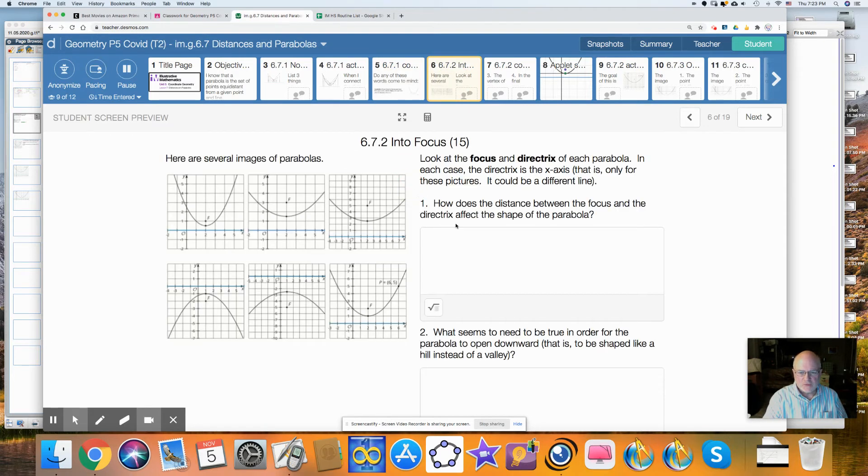Into focus. So we look at these, and we have the focus and the directrix. And what do you notice? Some people notice that when the focus is above the directrix, this opens up. When it's below the directrix, it opens down. Some people notice that the closer the focus is to the directrix, the narrower this gets, the wider it gets as far as the farther away you get. Some people say narrow, some people say thin, some people say wider or fat. So opening up and opening down.